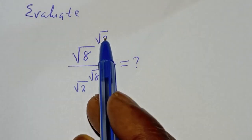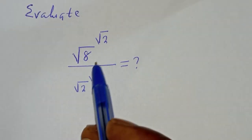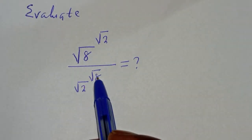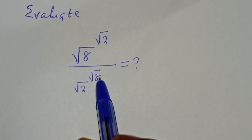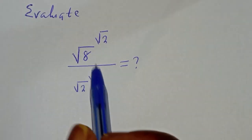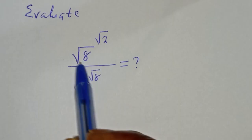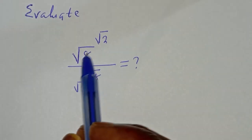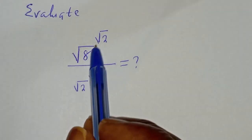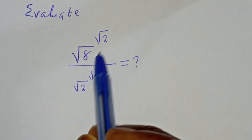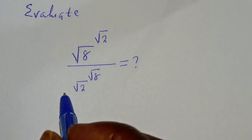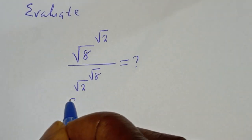Evaluate square root of 8 to the power of square root of 2, divided by square root of 2 to the power of square root of 8. Hi everyone, welcome to my class. In this class we quickly want to evaluate this nice radical problem: square root of 8 to the power of square root of 2, divided by square root of 2 to the power of square root of 8.